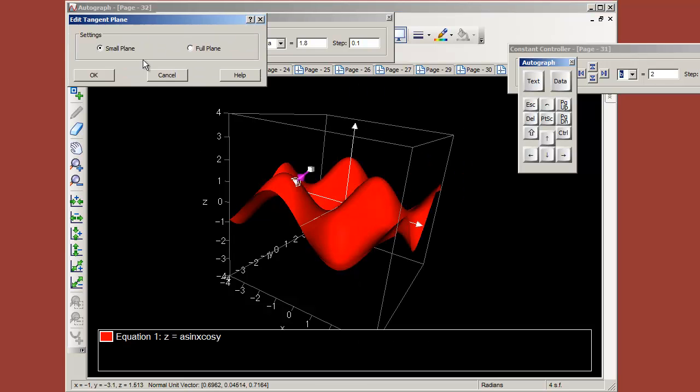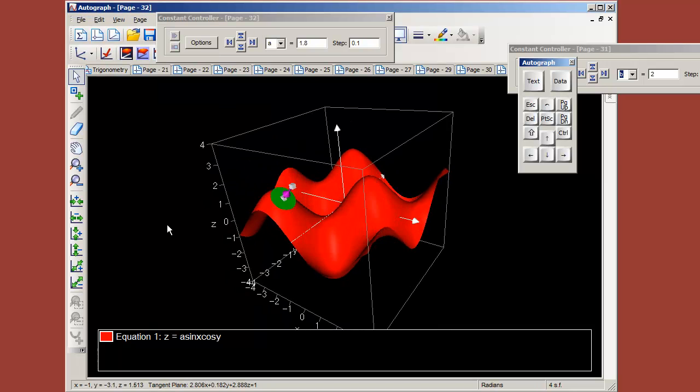Because if a tangent determines how steep a line is in 2D, then a plane will do the same thing in 3D. And there it is.